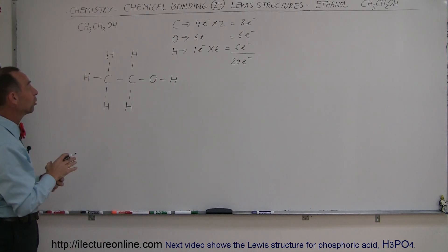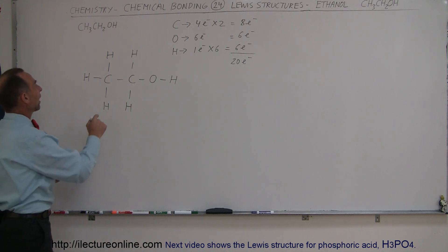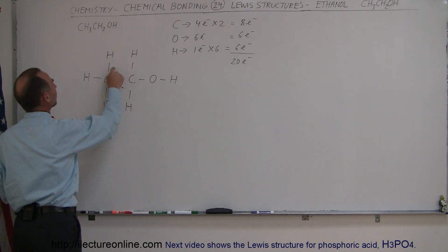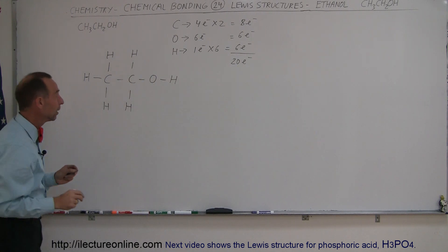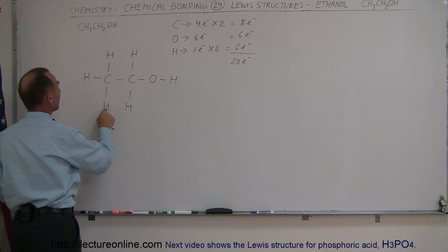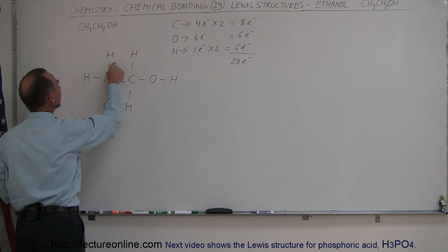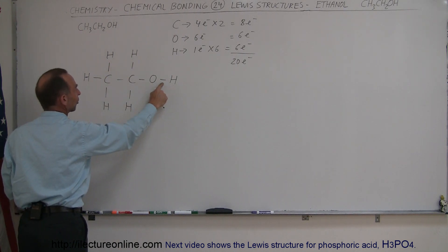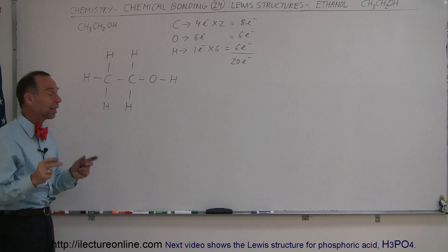Now let's make sure that all the rules are followed. Notice that all four electrons are used in bonding for this carbon, and all four electrons are used for bonding in that carbon. So that looks pretty good. With the hydrogens, each hydrogen can form a single bond and has done so. That looks pretty good.